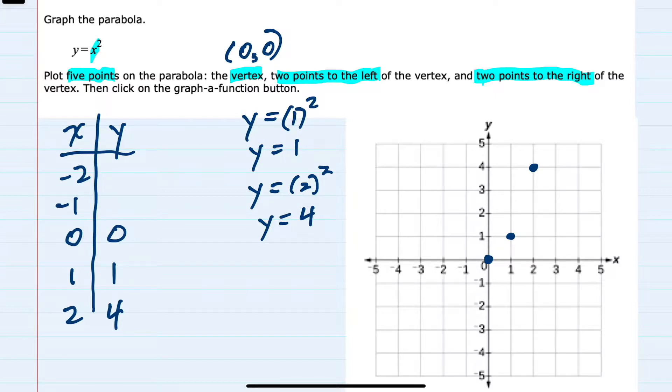I'll start by plugging in minus 1, which gives us y equals (-1) squared. And notice I'm using the parentheses because I'm substituting in a negative 1 for x. And when we square that, we again get a positive 1. So that gives us the point (-1, 1).